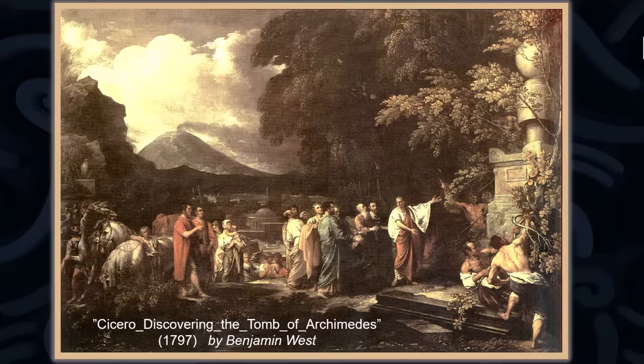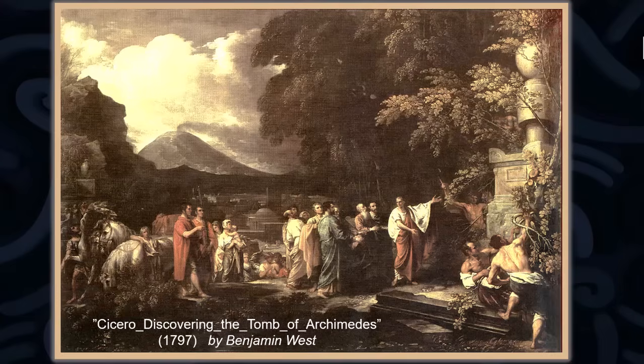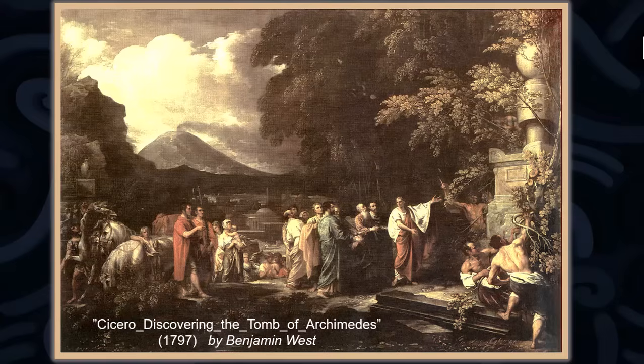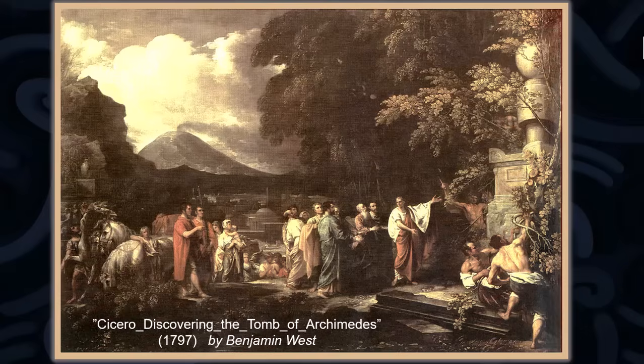Cicero was a defender of the Republic, and that made him a political opponent of his contemporary, Julius Caesar. Like Caesar, Cicero was brutally murdered, within two years of Caesar's death, but it was at the hands of the soldiers of Mark Antony, who was his enemy.